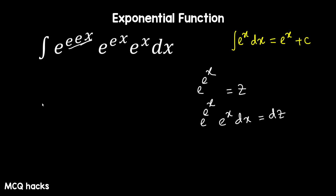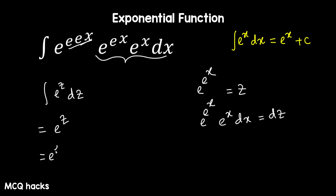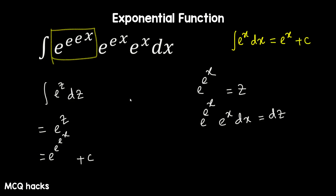Now, if you just substitute here, the integration of e to the power z — the whole genus is just dz. Now, what do you do? Just e to the power z. If you substitute back the value of z, then: e to the power e to the power x plus c. Now, if we have a format where the error is gradually reduced, then just the genus plus c.